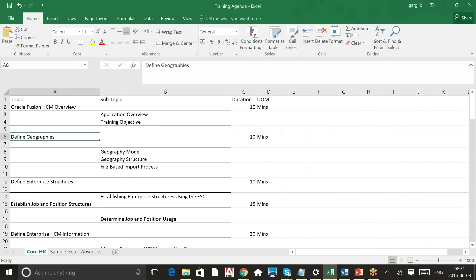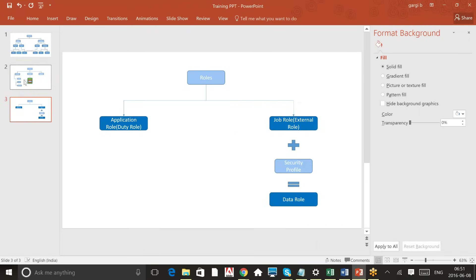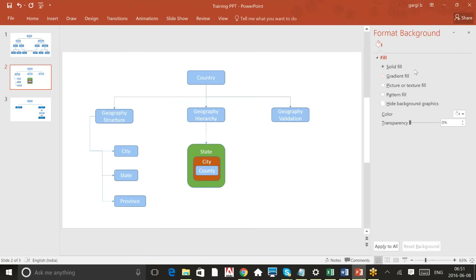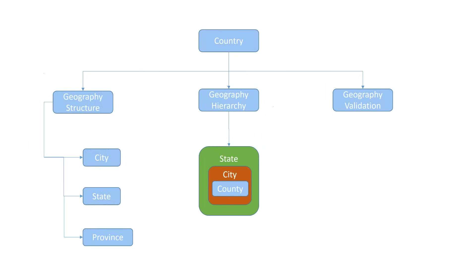Let me give you an idea about what is meant by geography. When you go for implementation, you must know on day one which countries you are going to implement. The country comes at the top of the geography hierarchy, and under that there is a geography structure, geography hierarchy, and geography validation. Geography structure means what all elements are there in your address — the address could be an employee's address, an organization's address, or used in any other module.